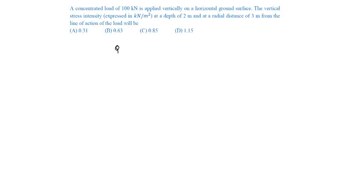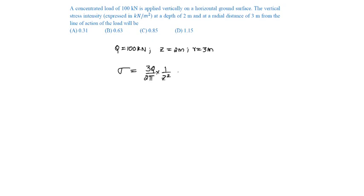Given: concentrated load Q is 100 kilonewton, Z is 2 meters and R is 3 meters. Applying Boussinesq's equation: 3Q by 2π into 1 by Z squared into 1 by (1 plus R by Z) whole square, whole power 5 by 2.